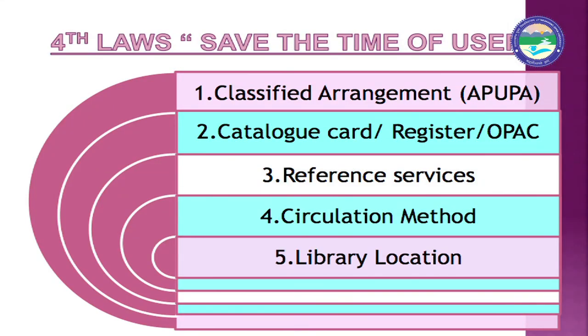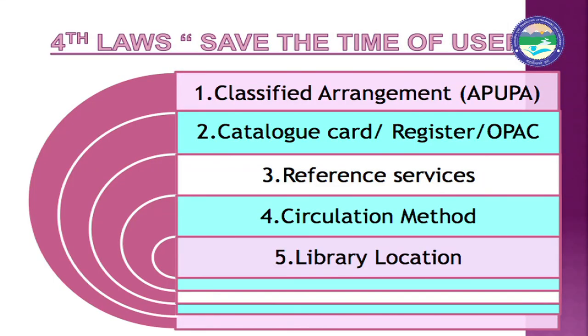Now let's talk about the Catalog Card, Register, or OPAC, which I discussed in the last slide. The catalog card has classification and bibliographic details that users can use to search for a book. Now let's talk about Reference Service. Reference Service is a user-oriented service divided into two parts: Ready Reference Service and Long Range Reference Service.